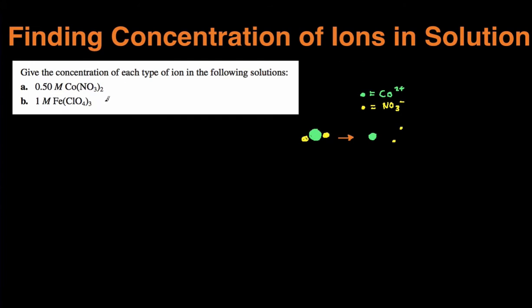I have two example problems we're going to work through here, and I'll show you multiple ways to do these problems. So the problem reads, give the concentration of each type of ions in the following solution.